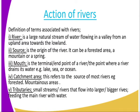We start by defining what is a river. A river is a large natural stream of water flowing in a valley from an upland area towards the lowland. It must flow from the upland towards the lowland — that is the way rivers flow.